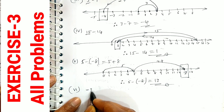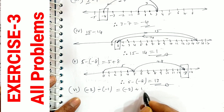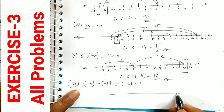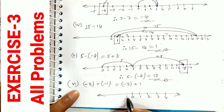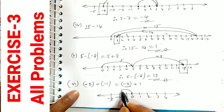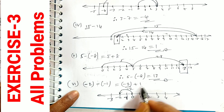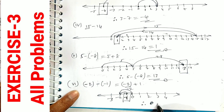Last part of Q1: minus 2 minus (-1). This equals minus 2, and since minus into minus gives plus 1, it becomes minus 2 plus 1. On the number line we go to minus 2, then move 1 step forward, giving minus 1 as the answer.